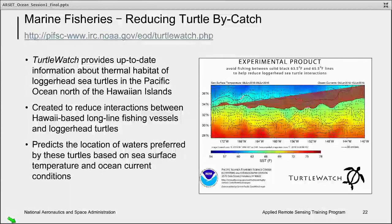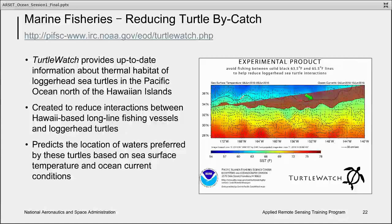The first example is for Turtle Watch. One goal of marine fisheries is to reduce bycatch, or the unintended catch of organisms not intended for market. Turtle Watch provides up-to-date information about the thermal habitat of loggerhead sea turtles in the Pacific Ocean north of the Hawaiian Islands. Turtle Watch predicts the location of waters preferred by these turtles based on sea surface temperature and ocean current conditions. The tool provides information to fishers to avoid fishing between the region on the map that falls between 63.5 and 65.5 degrees Fahrenheit, as these are the regions that are most favored by the turtles.